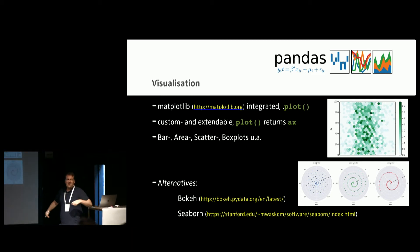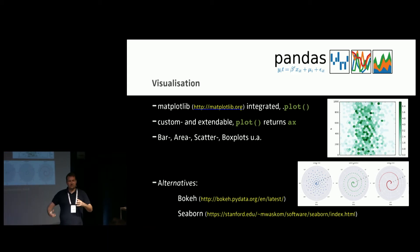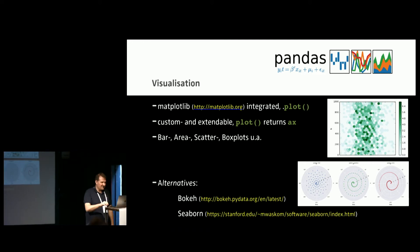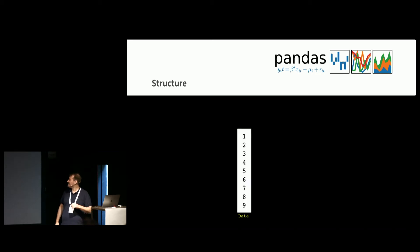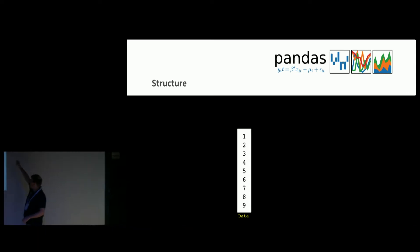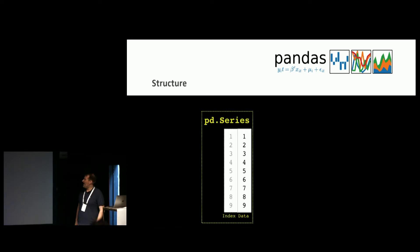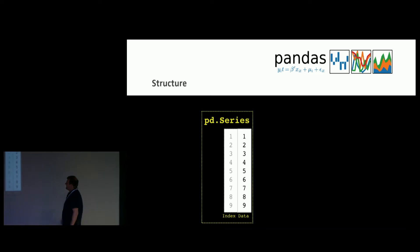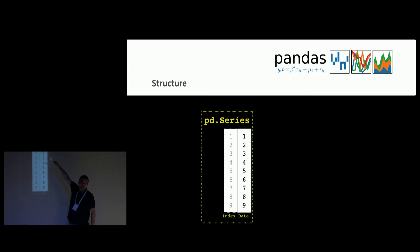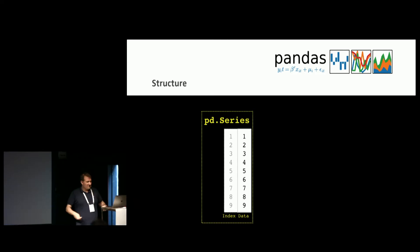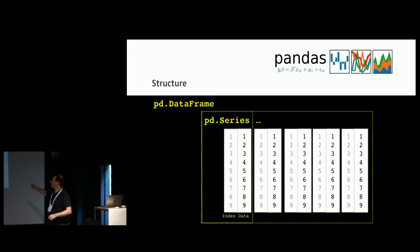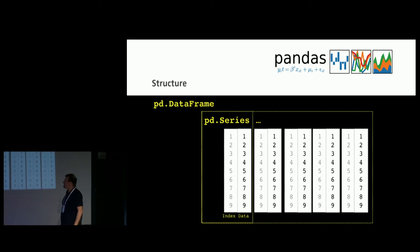I mentioned data frames — we read everything in Pandas into a data frame. What is a data frame? The idea behind it comes from the R world. Think of data like a series of data points — that's a series. A series of data with an index is a Pandas Series. And a data frame is just multiple series together in one frame.